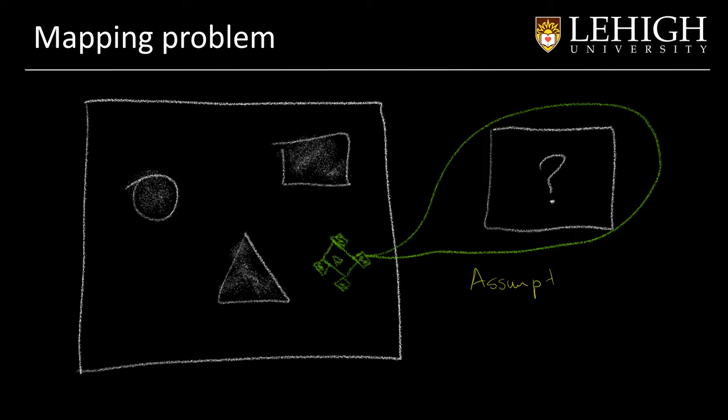In this case our assumption is that the localization is perfectly known. We know with accuracy the location of the robot and we can measure the environment. So the problem now is how can we combine the location of the robot and the measurements to obtain the map of the environment.